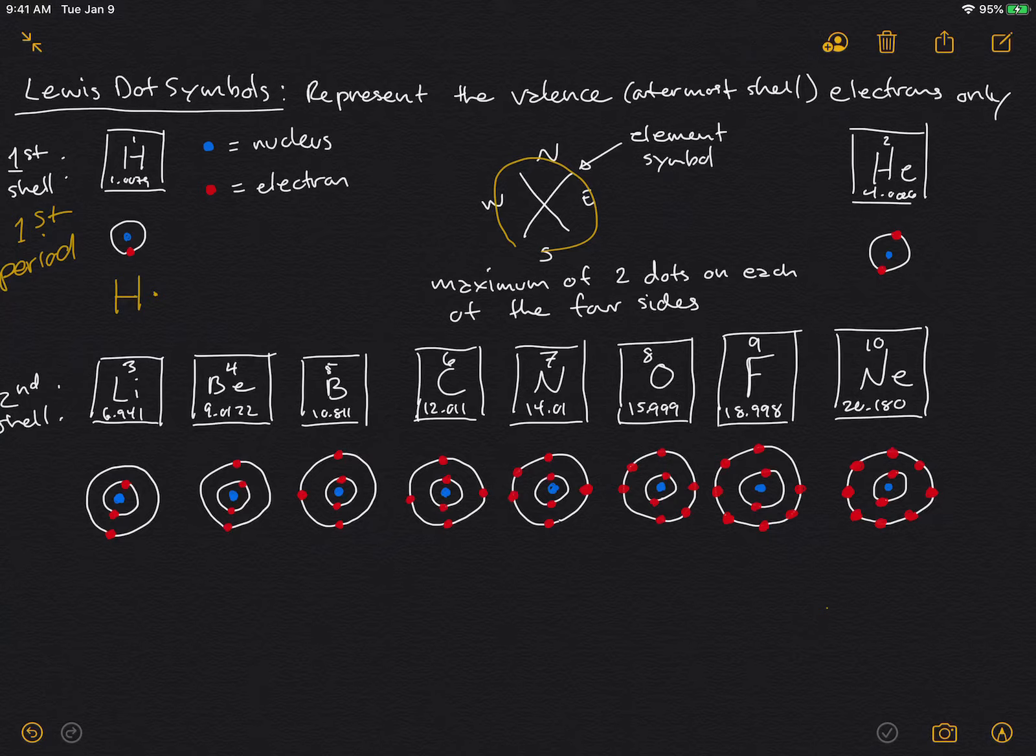Then you go across to helium, and it has one more electron. So we're building up the shells. Helium has one electron on one side and the second electron on the other side, the next side. Usually we go in that order counterclockwise, starting with the east side. Helium's Lewis dot symbol looks like this, and now that is a full shell, since the first shell can only have as many as two electrons.